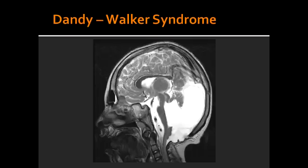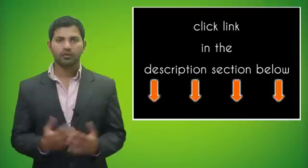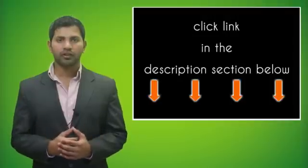What is Dandy Walker Syndrome? Dandy Walker Syndrome is agenesis of the cerebellar vermis with cystic enlargement of the fourth ventricle, which fills the enlarged posterior fossa. Dandy Walker Syndrome is associated with hydrocephalus and spina bifida.